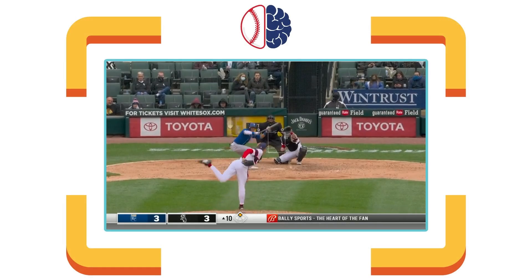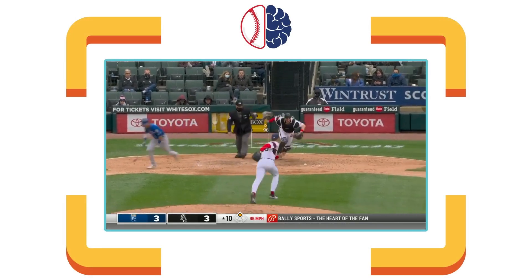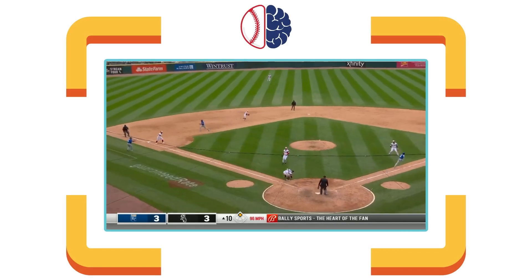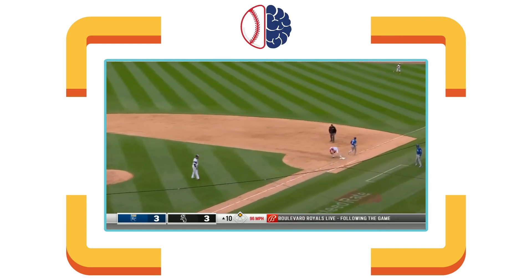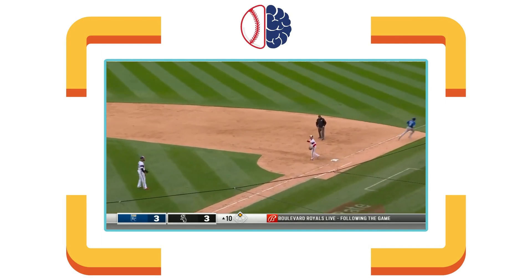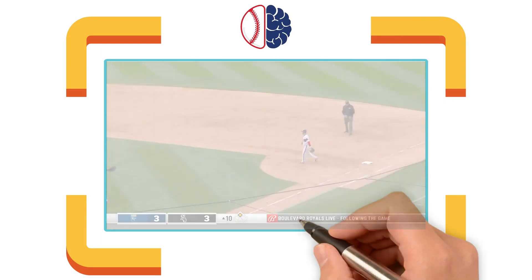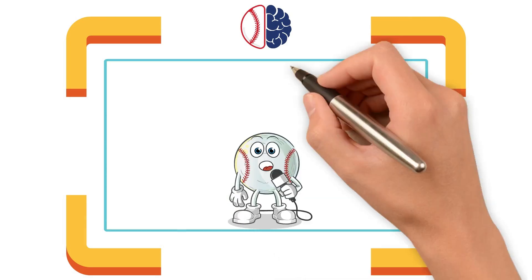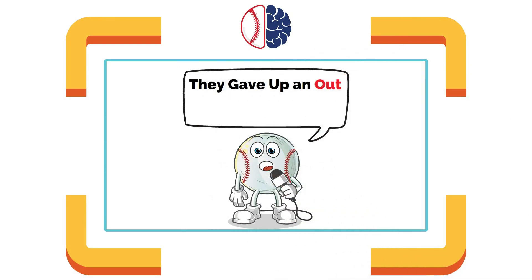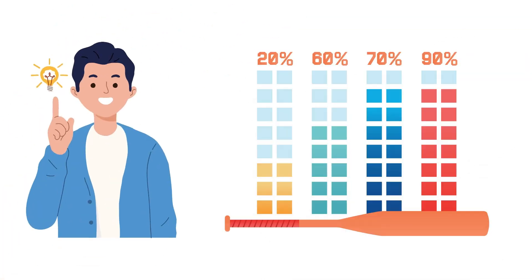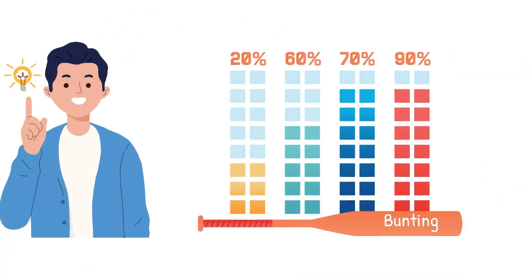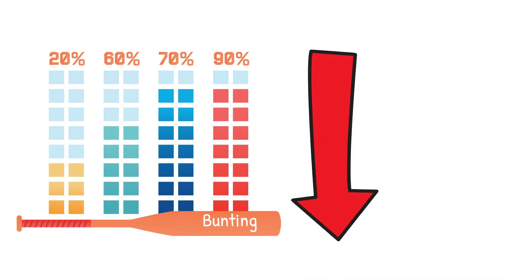It's the move every Little League coach teaches: runner on first, nobody out, lay down a bunt. It feels like smart baseball — a selfless play, a get-em-over, get-em-in classic. But what if I told you that statistically, bunting almost always lowers your chances of scoring?